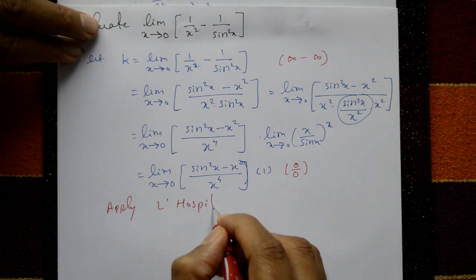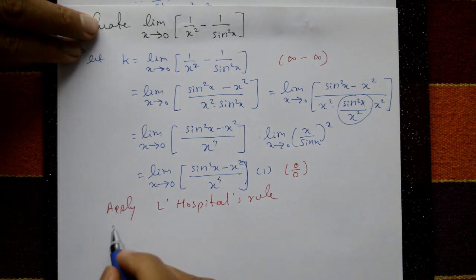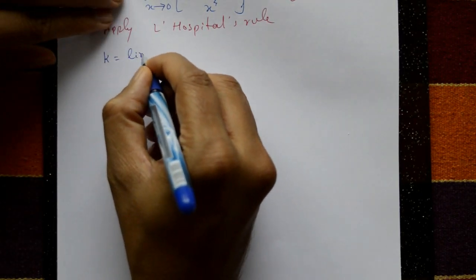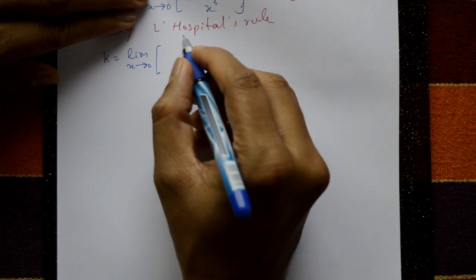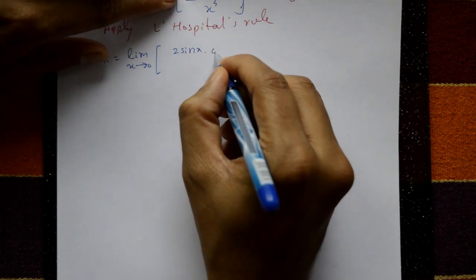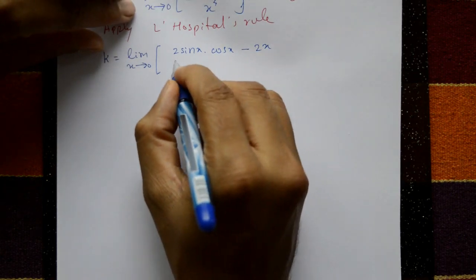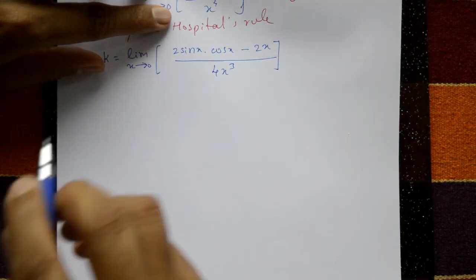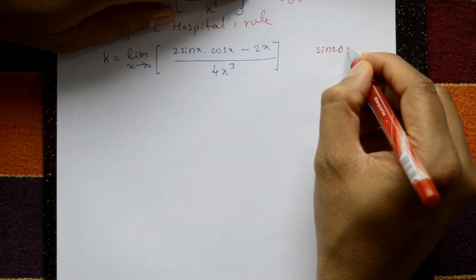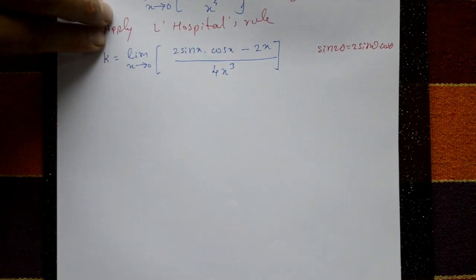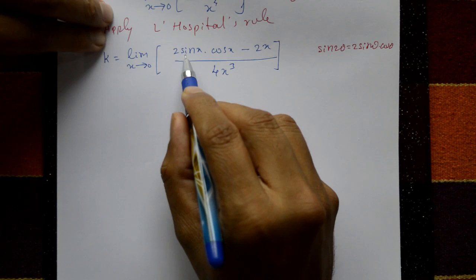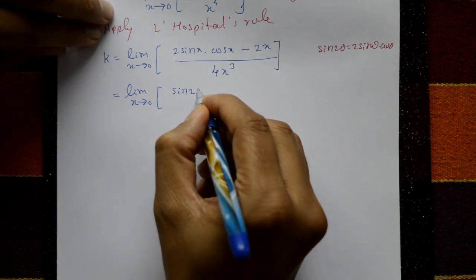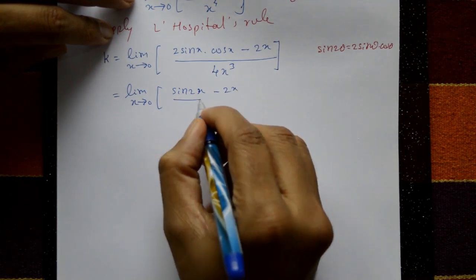Apply L'Hôpital's rule. Differentiate numerator: 2·sin x·cos x minus 2x equals sin 2x minus 2x, using the double angle formula 2·sin θ·cos θ = sin 2θ. Denominator differentiates to 4x³. This gives limit x tends to 0 of (sin 2x minus 2x) / 4x³.